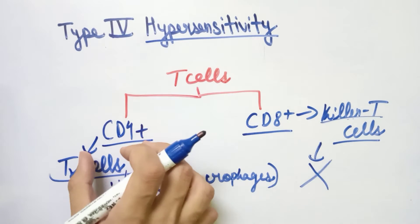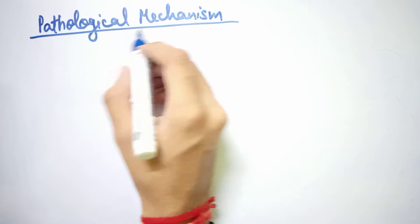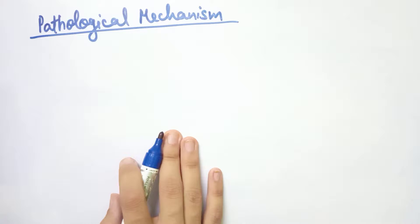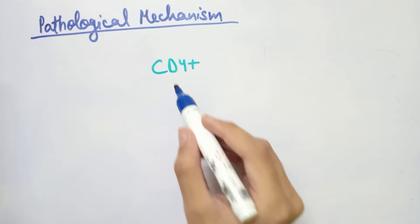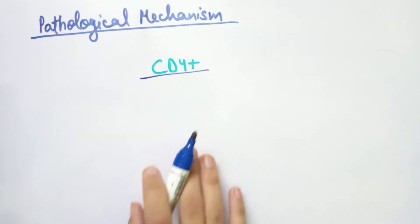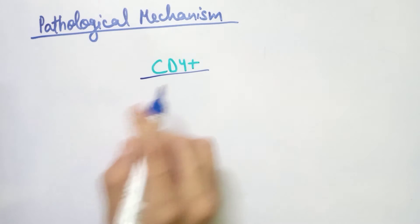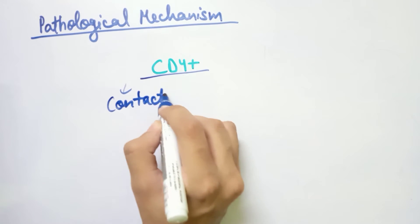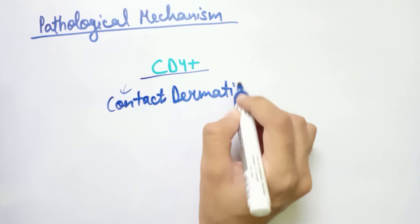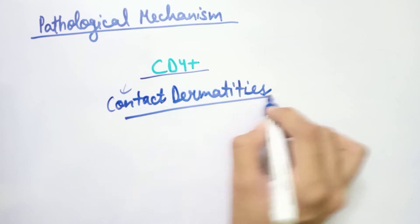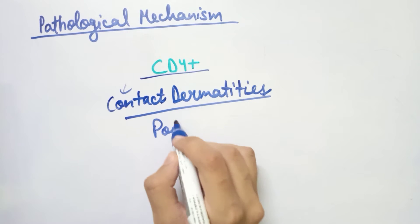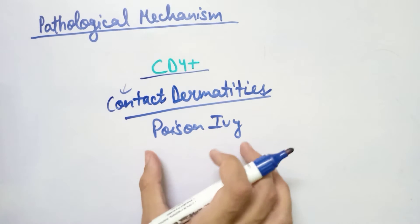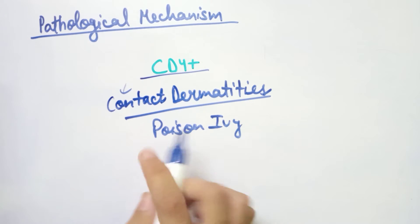Now let's look at the pathological mechanism of Type 4 hypersensitivity, especially in the case of CD4+ cells — how the reaction develops. We can take the example of contact dermatitis disease, which is mainly caused by plant species such as Parthenium or poison ivy.